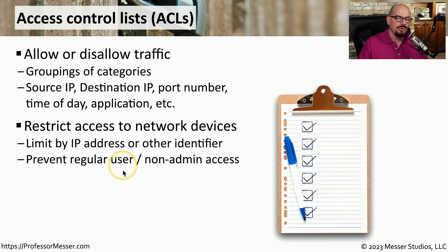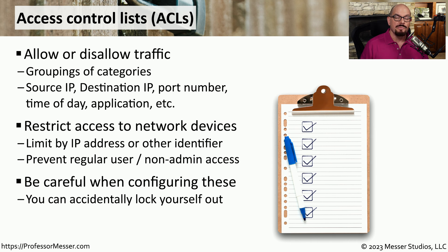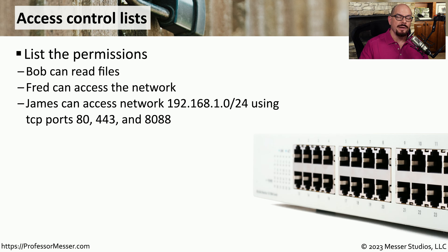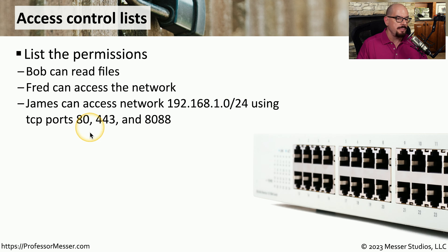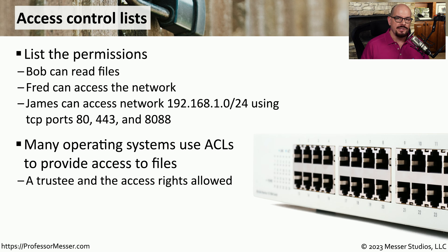Or maybe access is based on the user. If it's a regular user, they might not have access, but if you are an administrator or super user, you may have the proper access to that service. It's also important when configuring ACLs to take all different connections into account — you don't want to create an ACL that would lock you out from building other ACLs in that system. For example, you might have a rule that says Bob can read files on a particular resource, Fred can access the network, and James can access the network 192.168.1.0/24 using only TCP ports 80, 443, and 8088. ACLs are also found in operating systems — if you've configured permissions to a folder or file, or created groups and added users, you've configured an access control list.